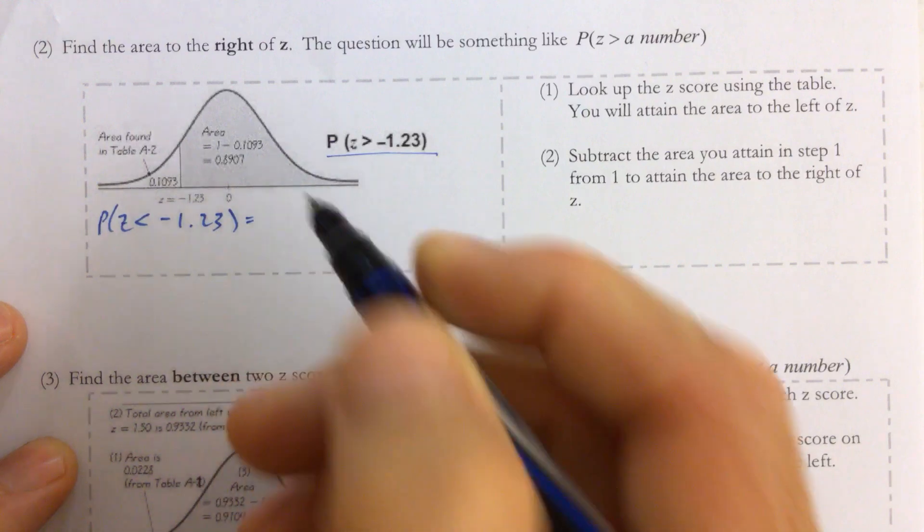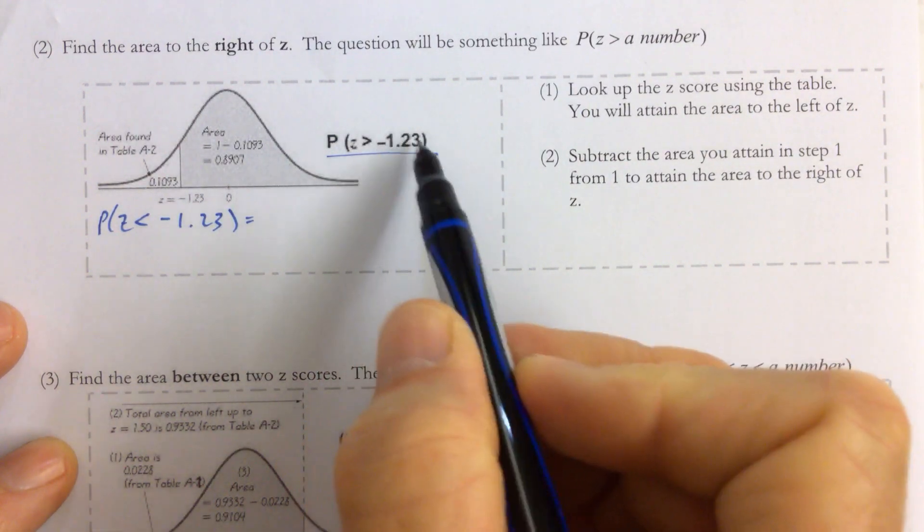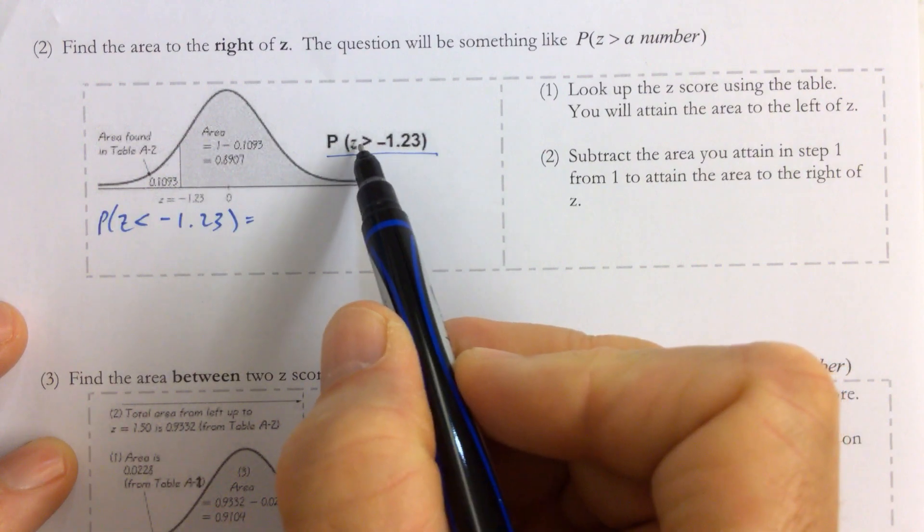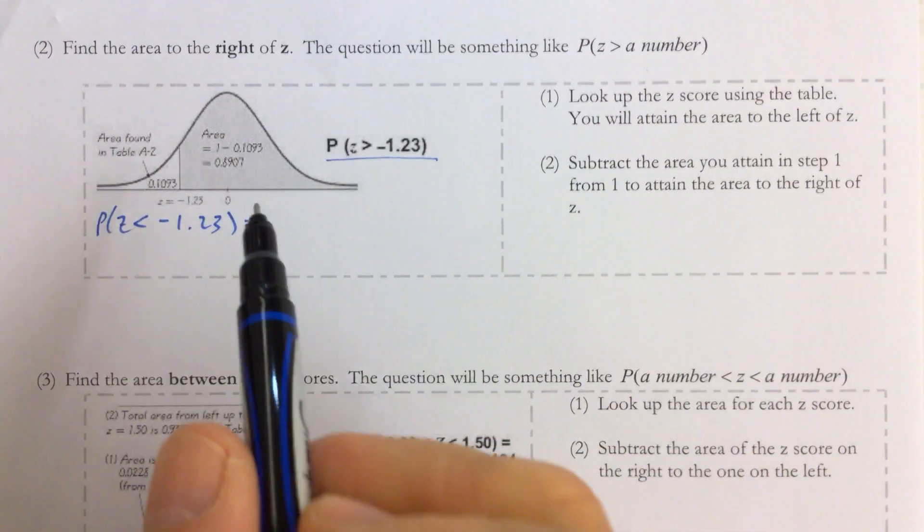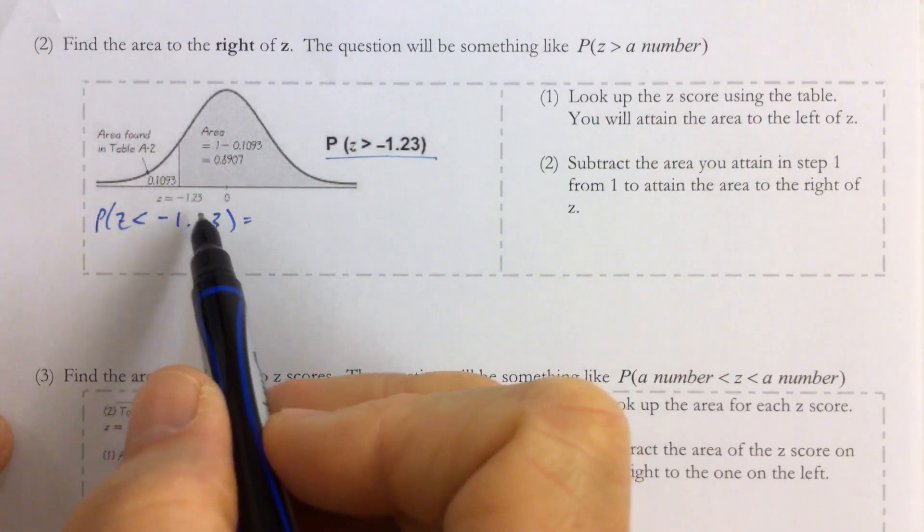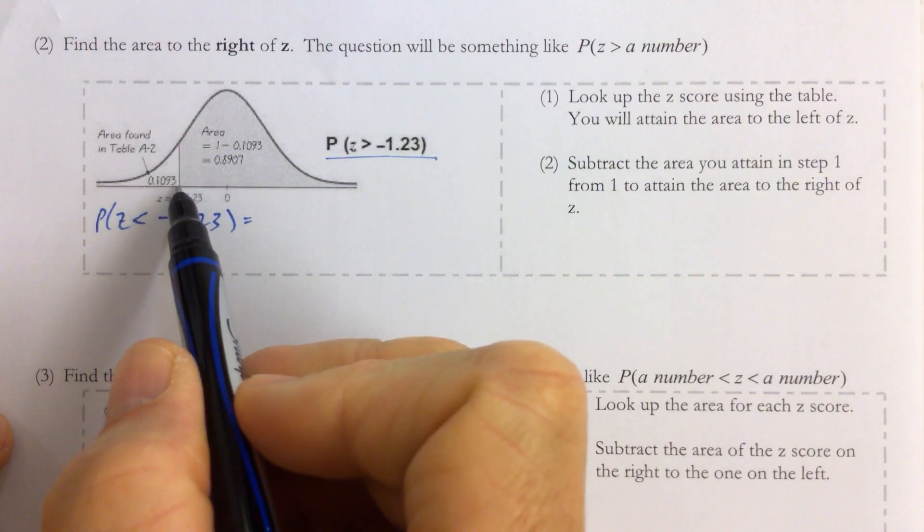and that will be what you can find in the table. You'll never find in the table like looking up a z-score and finding the probability that z is greater than. We always find the probability that z is less than a number in the table, which is the same as the area to the left of that number, of that z-score.